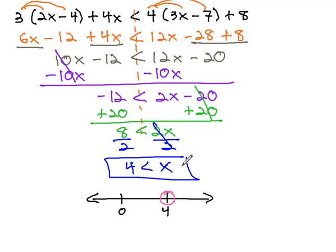We need to graph how x is related to the 4. Because the inequality opens to the x, the x is the greater value, meaning we need to shade towards greater values. This is off to the right.